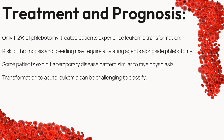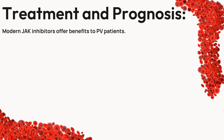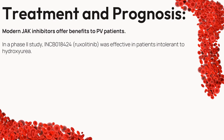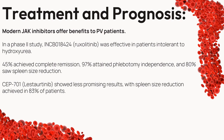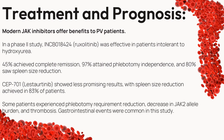Enter modern JAK inhibitors — the game-changers in treatment. In a Phase II study, INCB018424 (also known as ruxolitinib) showcased effectiveness in hydroxyurea-intolerant patients: 45% achieved complete remission, 97% became phlebotomy-independent, and 80% saw a reduction in spleen size. CEP-701, or lestaurtinib, presented a mixed profile with 83% of patients witnessing spleen size reduction. These studies highlighted not only therapeutic potential but also challenges, including common gastrointestinal events.